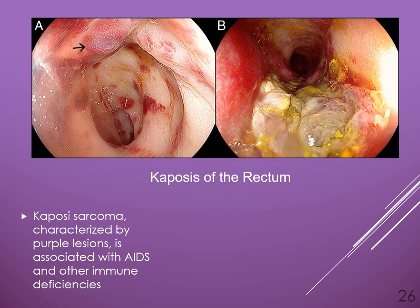Last on our list is Kaposi's sarcoma, characterized by lesions that grow in areas like the respiratory tract and the digestive tract. It is also known as human herpesvirus 8, or HHV-8. It's associated mainly with certain ethnic groups and is also fairly common in AIDS patients or other individuals with various immune deficiencies. It typically first presents as little purple papules, as shown in the image.